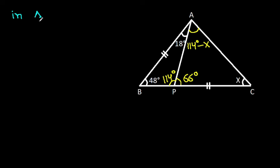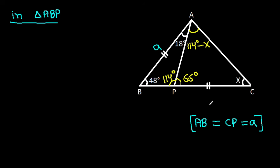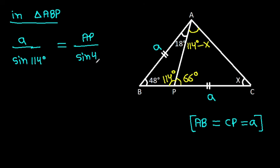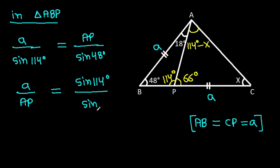In triangle ABP, we have AB is equal to CP. Suppose AB is A and CP is A. So A over sin 114 degrees... applying the sine rule: A over AB will be sin 114 degrees over sin 48 degrees. In triangle ACP, A over sin 114 degrees equals AP over sin X.